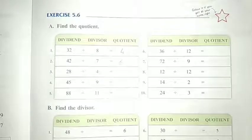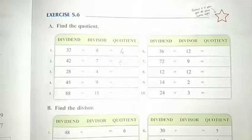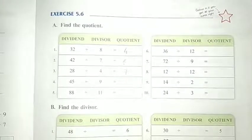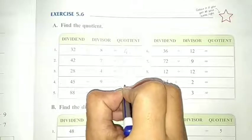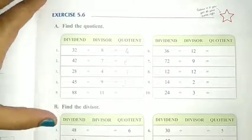Third one: 28 divided by 4. 4 का table बोलना है. 4 7s are 28, so our answer is 7. Then next one is 45 divided by 9. Say the table of 9: 9 5s are 45, so our answer is 5. आपको भी मेरे साथ साथ अपनी textbook में लिखना है.